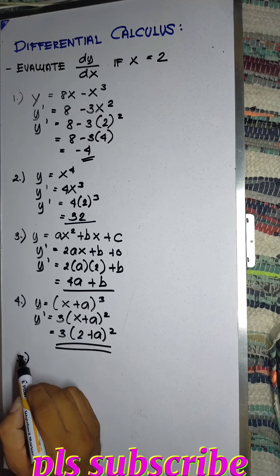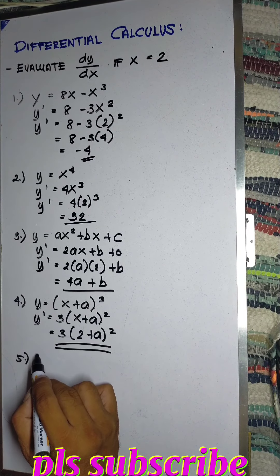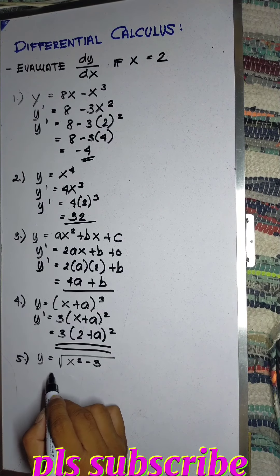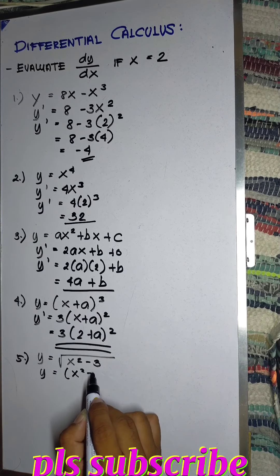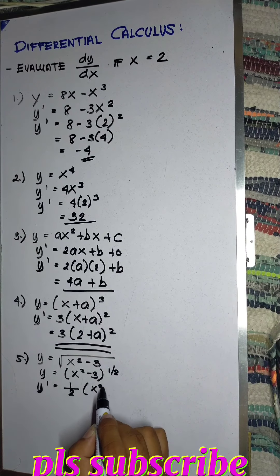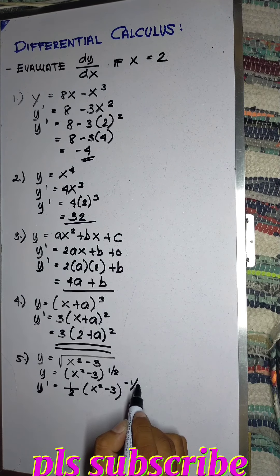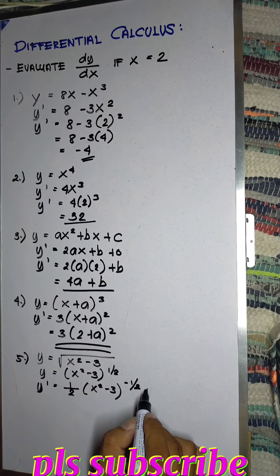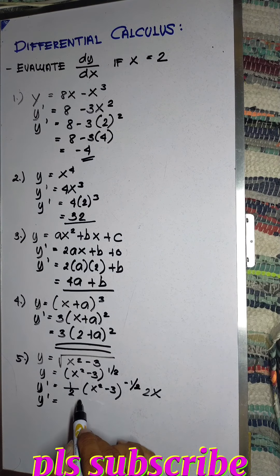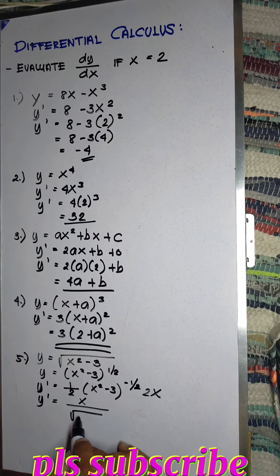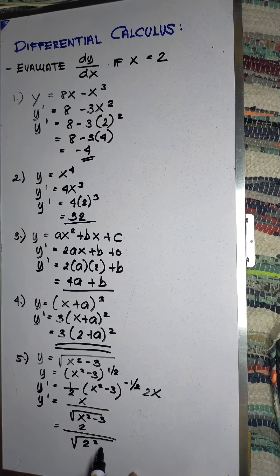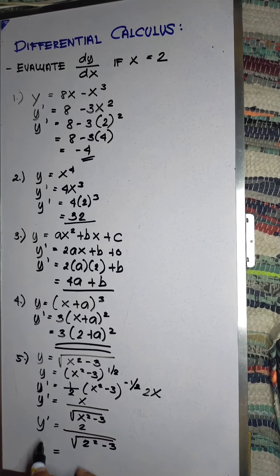Number 5, we have y equals the square root of x squared minus 3. Simplifying, y equals (x squared minus 3) to the one-half power. Therefore, the derivative y prime equals one-half times (x squared minus 3) to the negative one-half times 2x. This equals x over the square root of x squared minus 3. Substituting x equals 2, that will be 2 over the square root of 2 squared minus 3. So the derivative y prime will be 2.